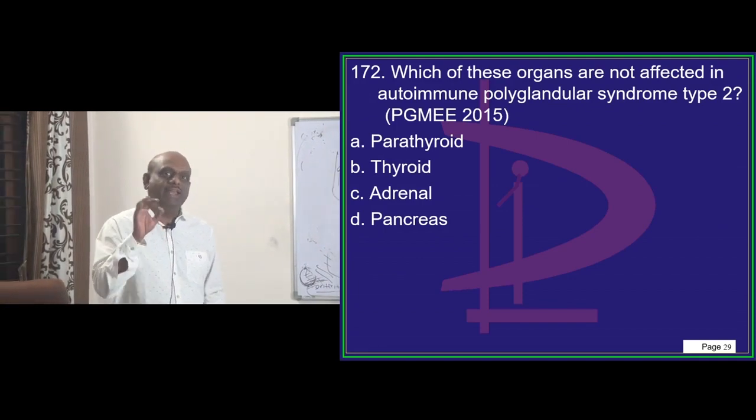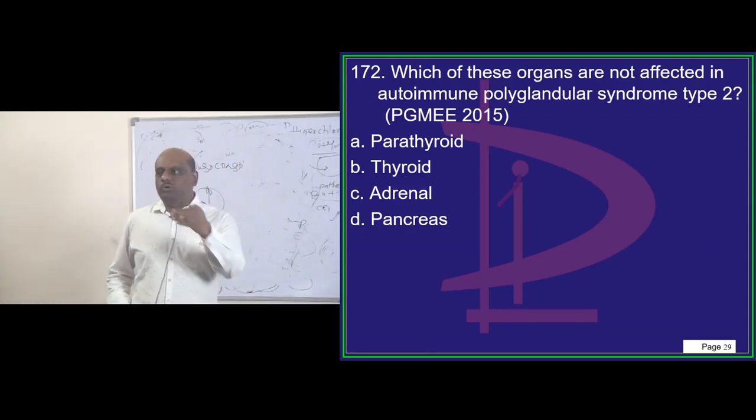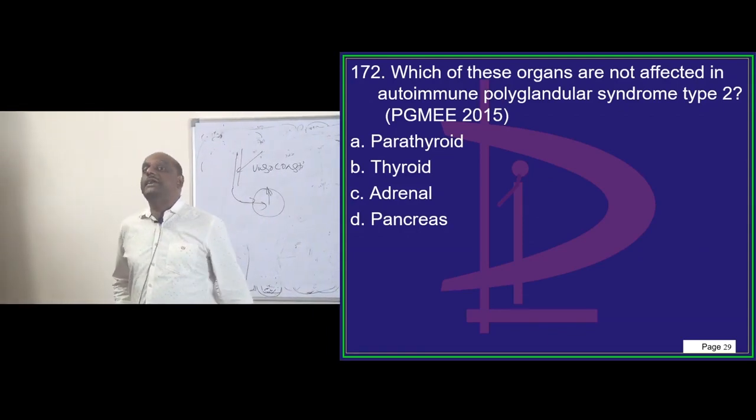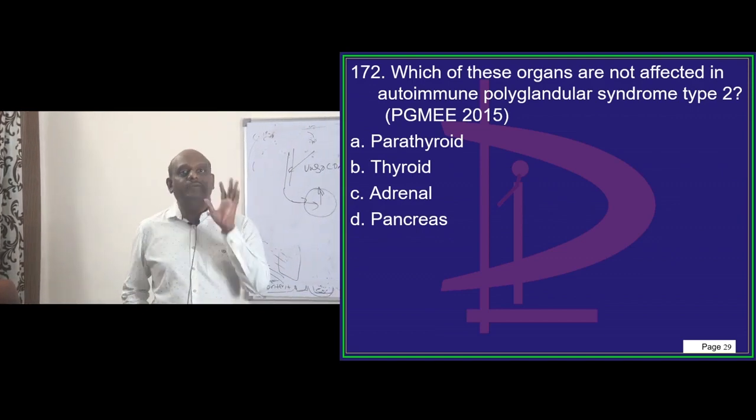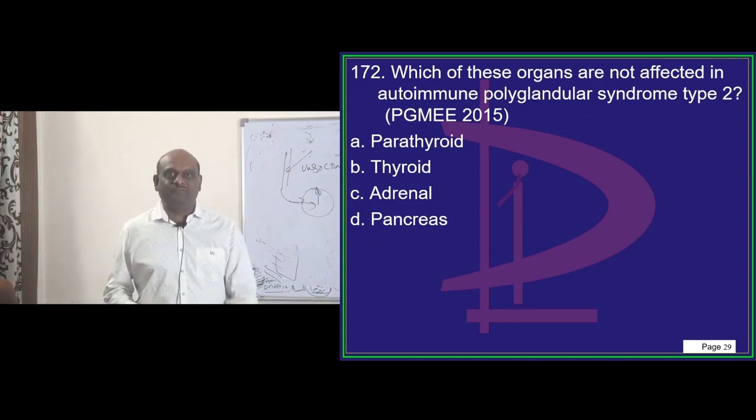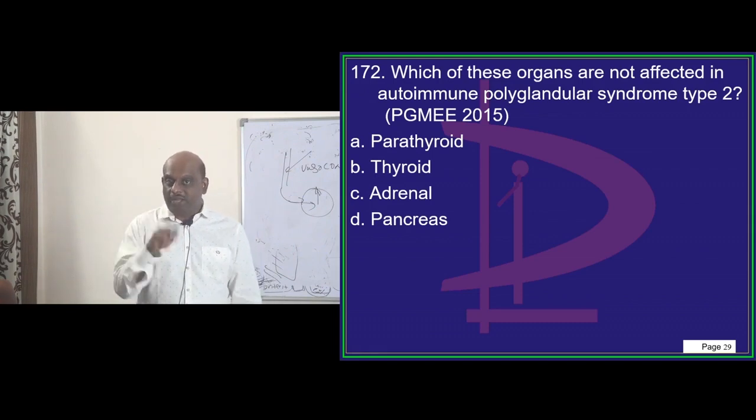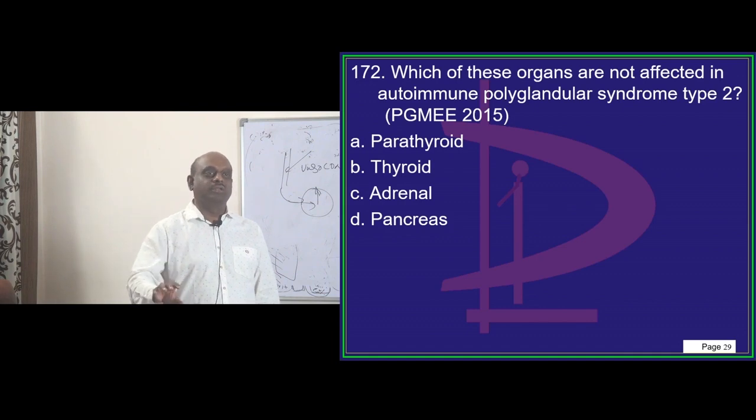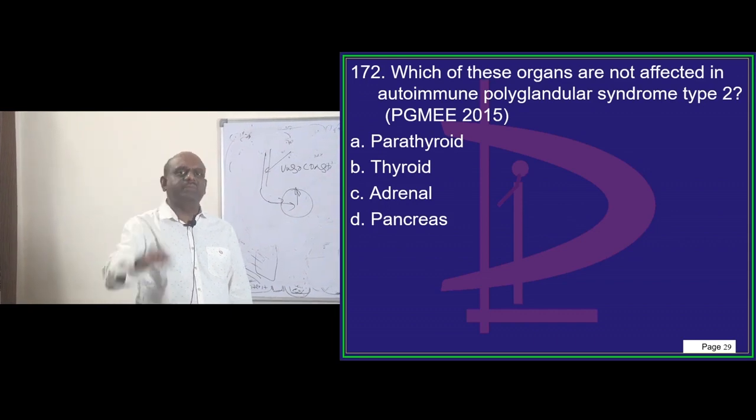Now comes a very important topic. Autoimmune polyglandular syndrome type 1, type 2. What are the components of it? Make a mnemonic, bookmark the slide on the Marrow app, and revise it with friends once or twice. You'll remember it for life.